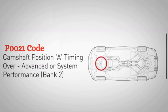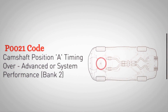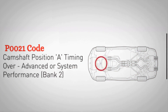First, let's understand what the P0021 code means. The P0021 engine code indicates that the engine control module has detected that the intake camshaft on the bank 2 side of the engine is more advanced than it is set to be. This code is often associated with variable valve timing systems in modern engines.